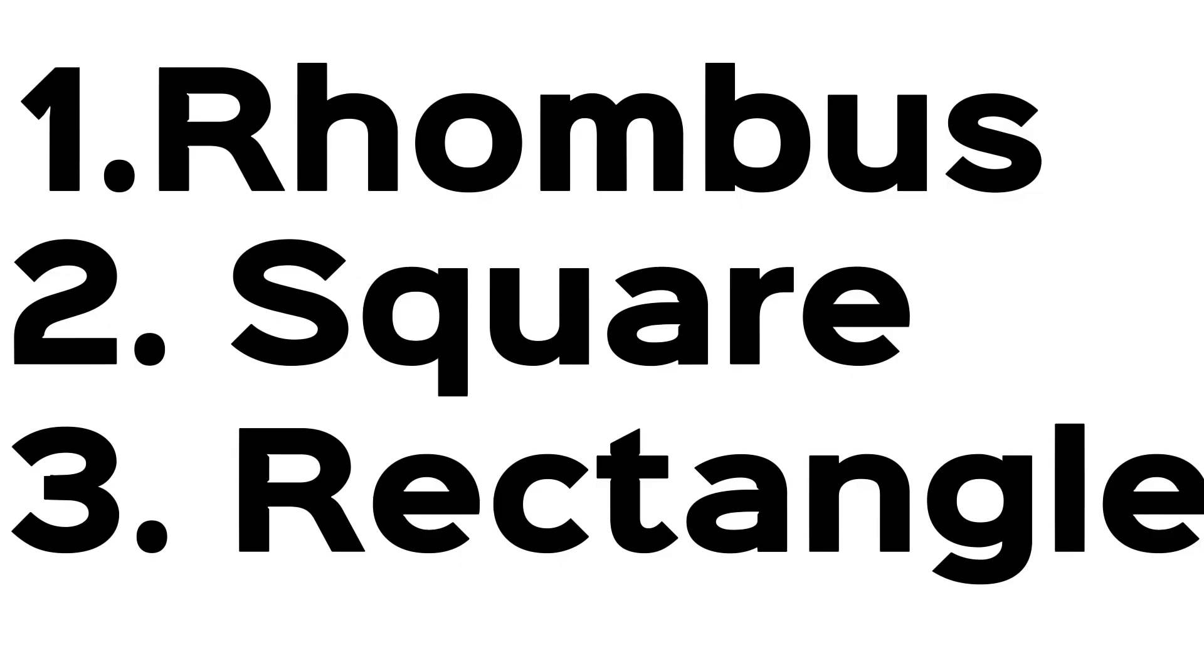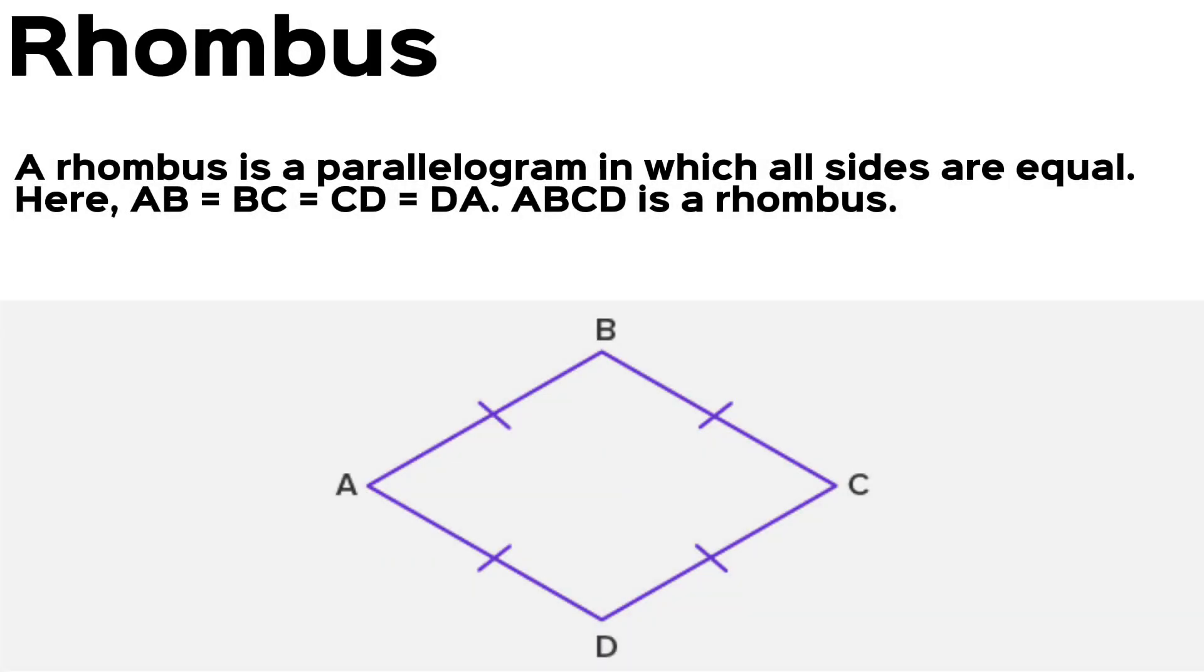So what is a rhombus? A rhombus is a parallelogram in which all sides are equal. Here, AB equals BC equals CD equals DA. ABCD is a rhombus.